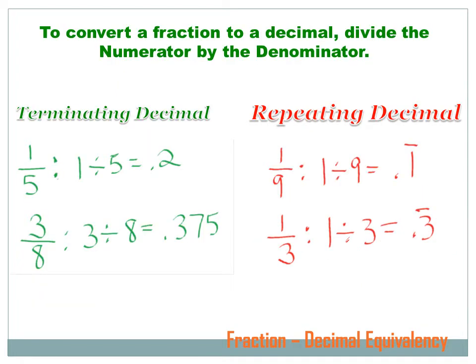Now it's real easy to convert a fraction to a decimal, as long as you know how to divide. All you have to do is divide the numerator of the fraction by the denominator. For instance, if I have the fraction one-fifth and I want to convert it to a decimal, I divide the one by the five, and one divided by five equals .2. And that's the decimal equivalent of that fraction one-fifth.